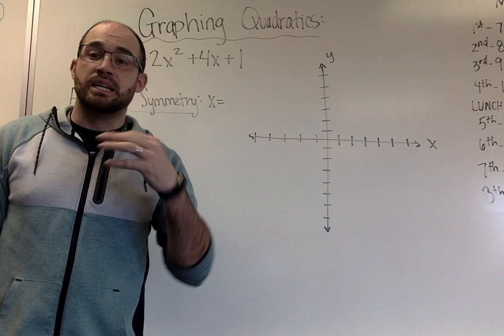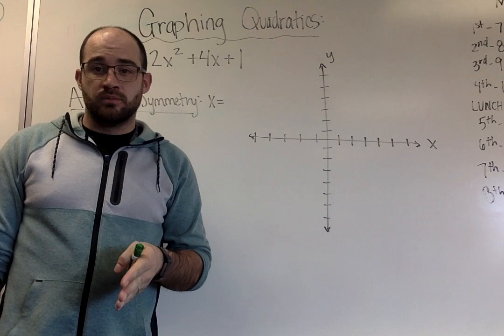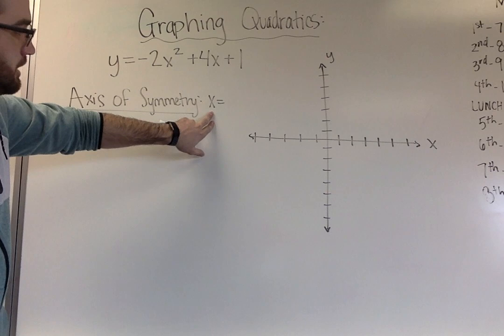So we've talked about our axis of symmetry, it is kind of the beginning step of dealing with our graphs. It is a line that goes straight up and down, starting at a spot on the x-axis. It is an equation, so you see here I have x equals,